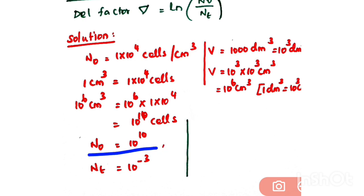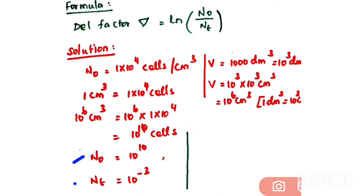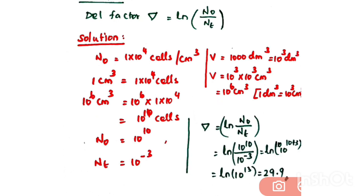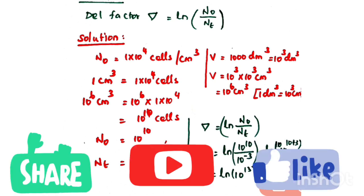N0 = 10^10 and Nt = 10^-3. Substituting: del = ln(10^10 / 10^-3) = ln(10^(10+3)) = ln(10^13) = 29.9. So the del factor is 29.9. Thank you for watching.